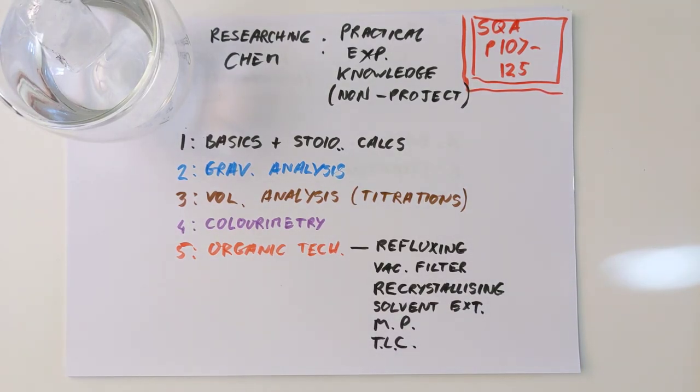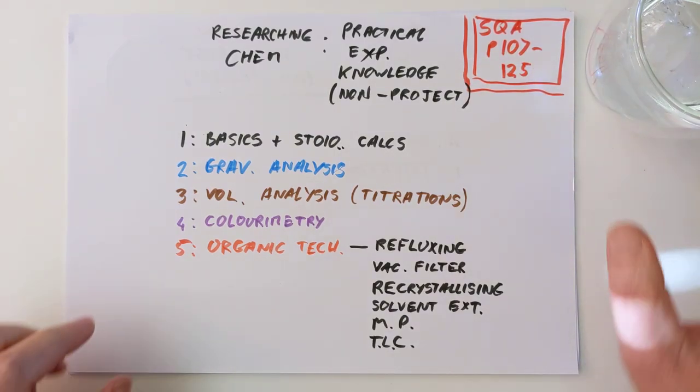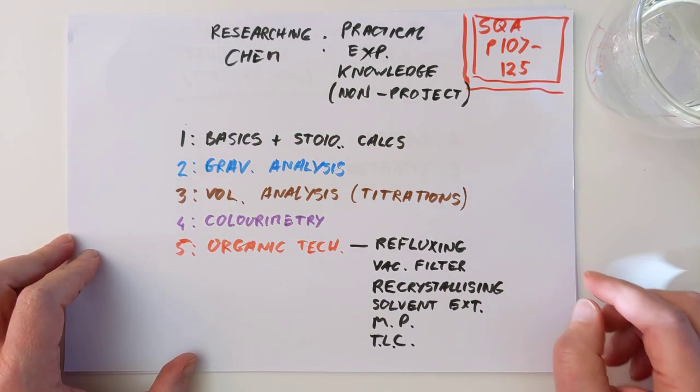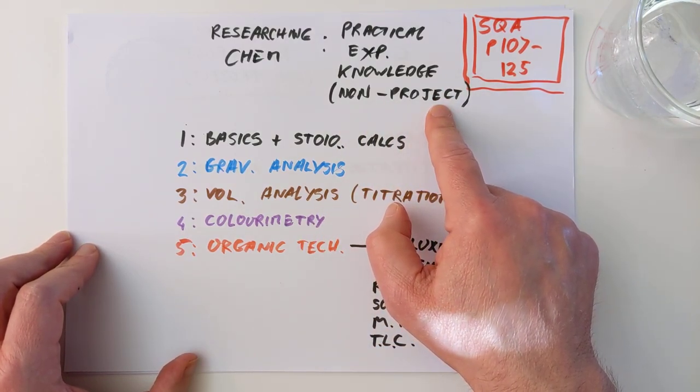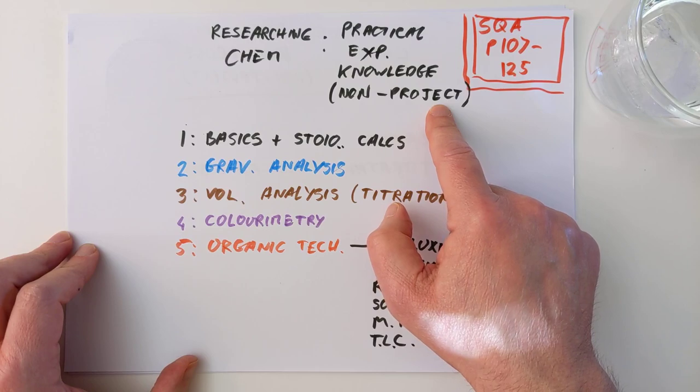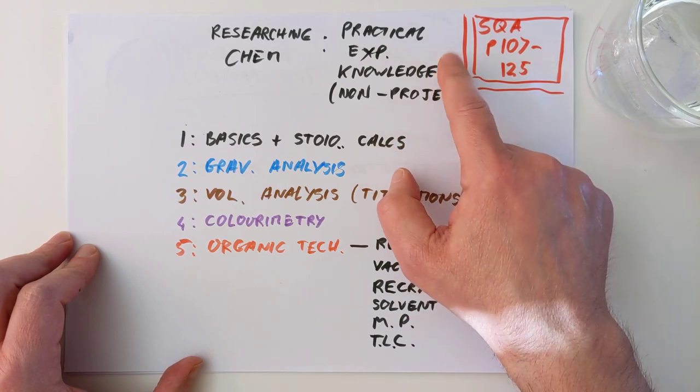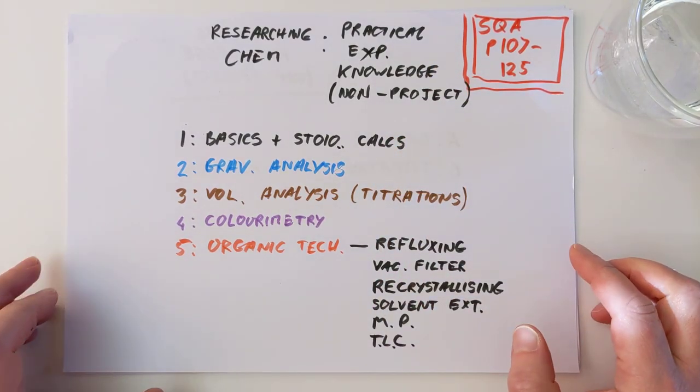Good afternoon folks, welcome back to Advanced Higher Chemistry. This is going to be a bit of a magnum opus, or as Baldrick would call it, a magnificent octopus. If you haven't seen Blackadder by the way, your homework is to go away and watch it. Today, we're going to be tackling the Research and Chemistry section of the course.